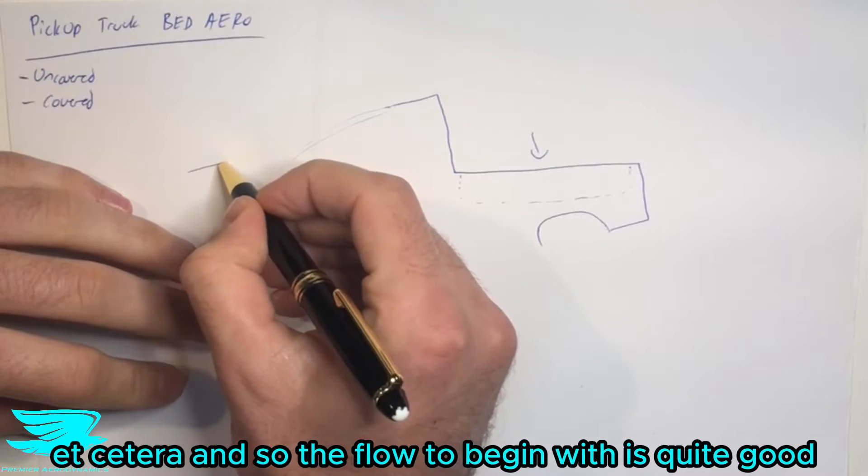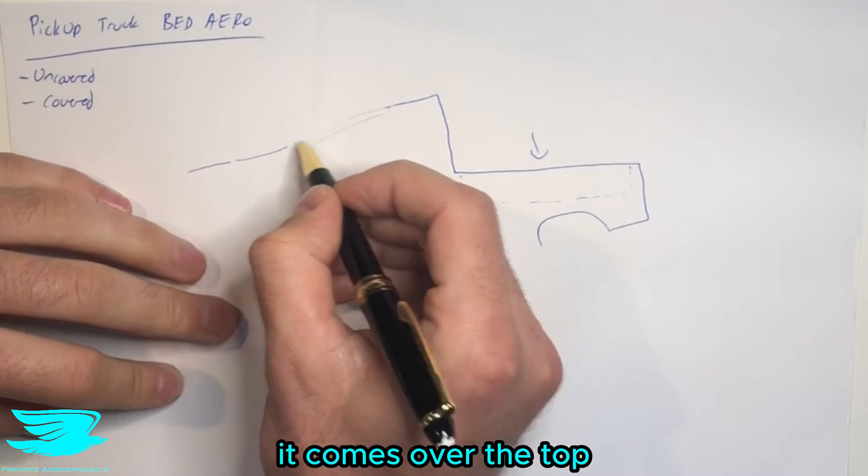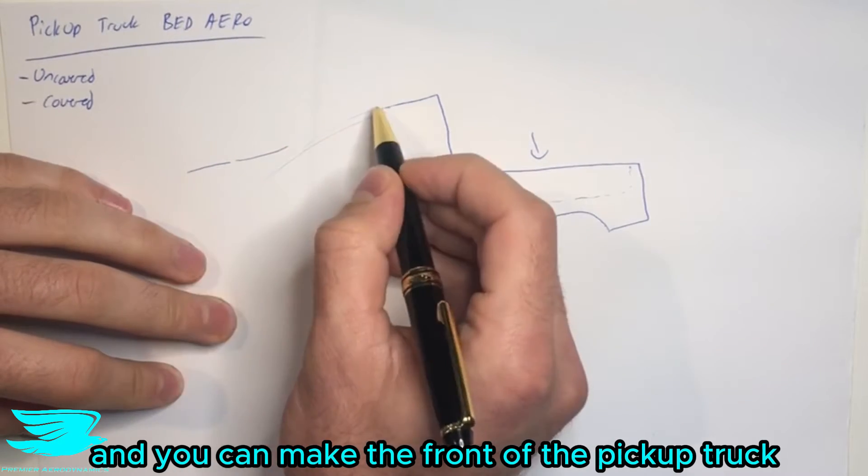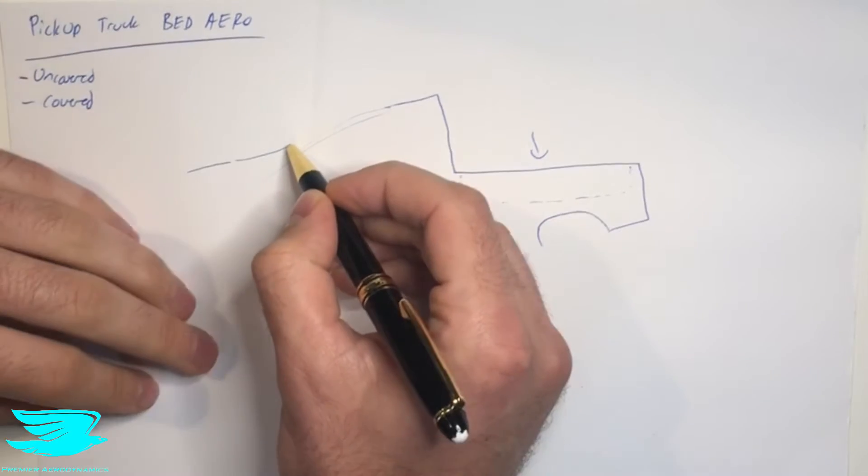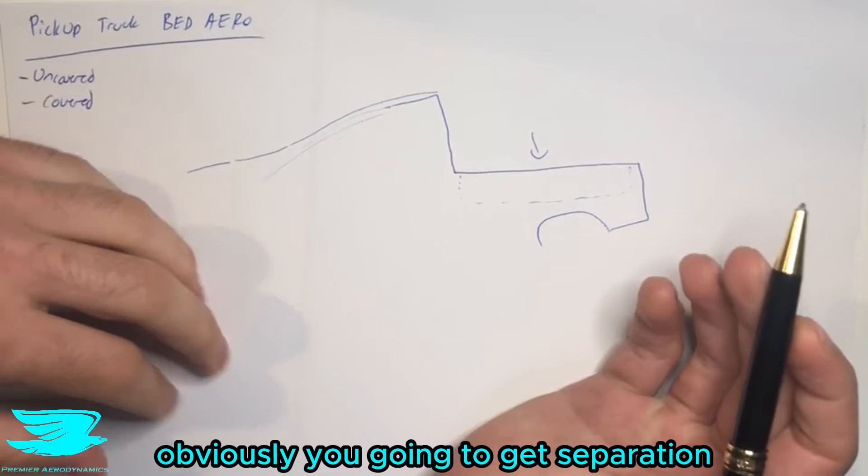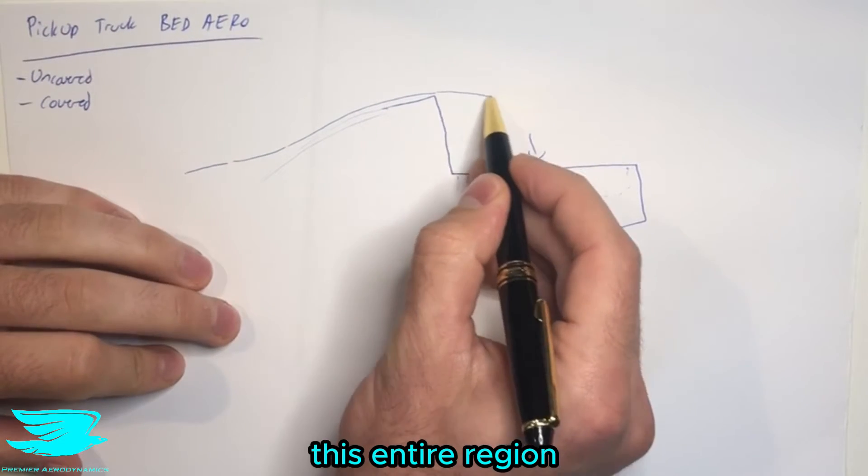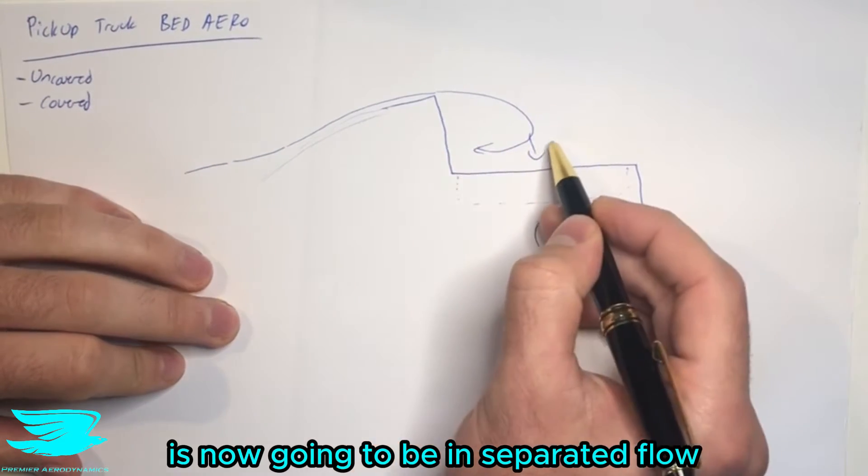And so the flow, to begin with, is quite good. It comes over the top, and you can make the front of the pickup truck very nice and sleek, so you don't get much of a drag in the front here. But as you get to the top here, obviously you're going to get separation. There's a very sharp edge here. So this entire region is now going to be in separated flow.